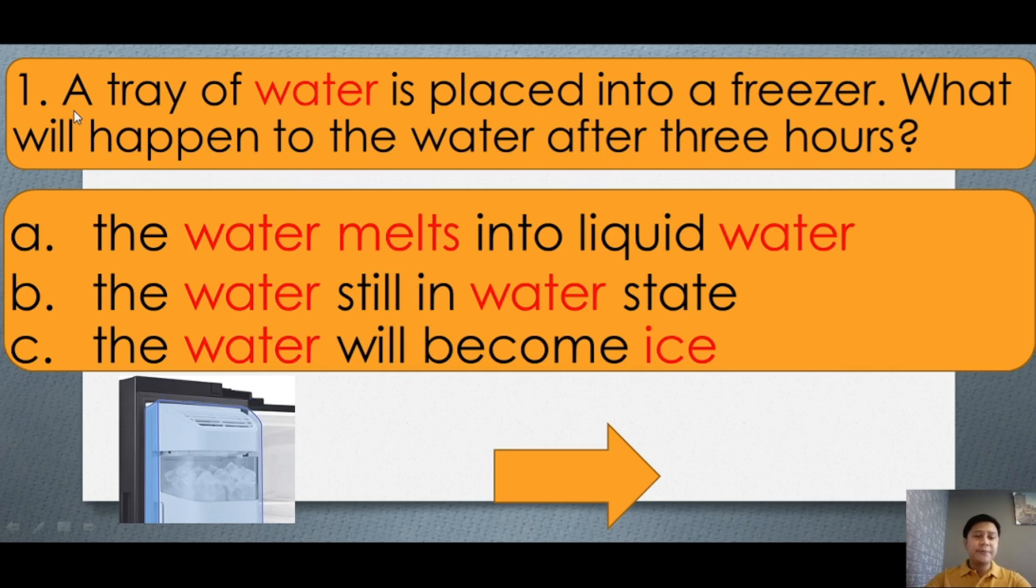Repeat after me now. A tray of water is placed into a freezer. Freezer, what does it mean? It's cold. What will happen to the water after three hours? So this is a chart. A, the water melts into liquid water. B, the water is still in water state. Or C, the water will become ice.